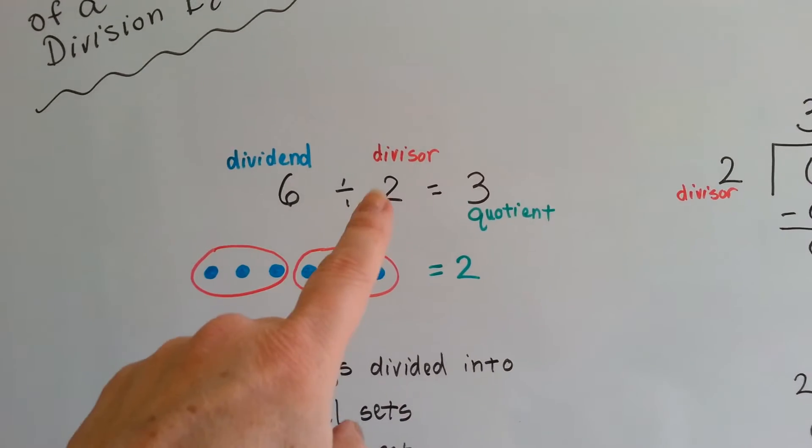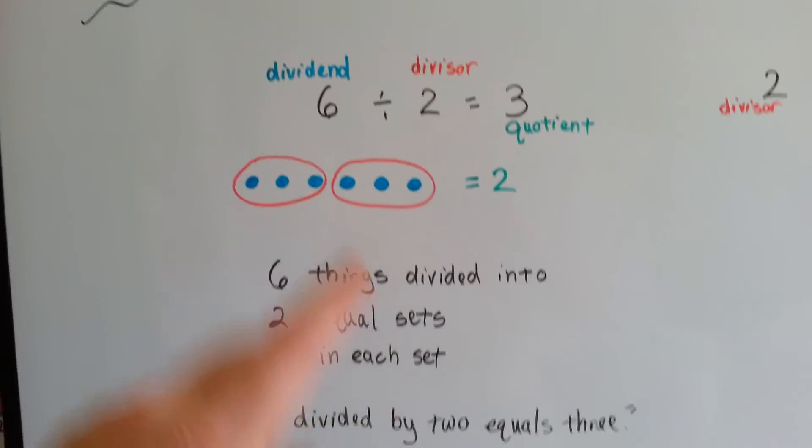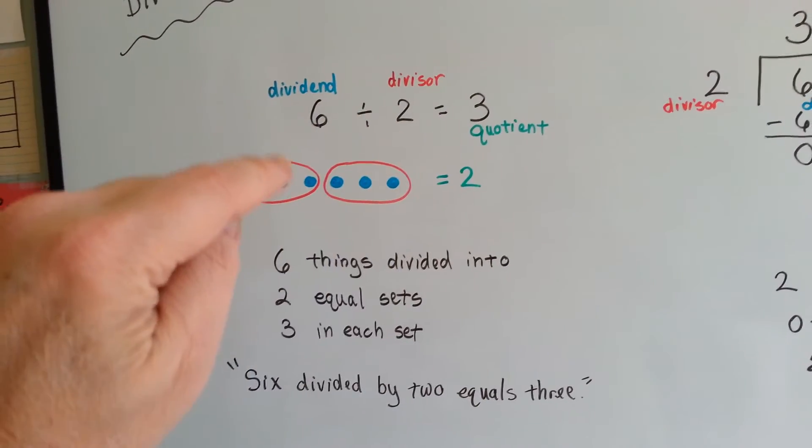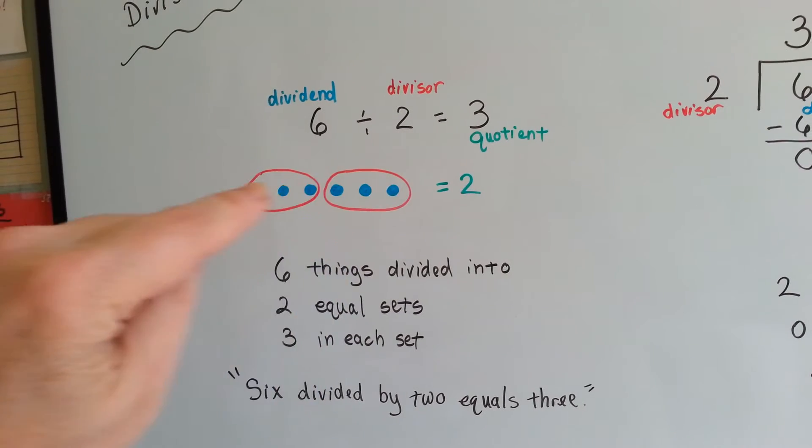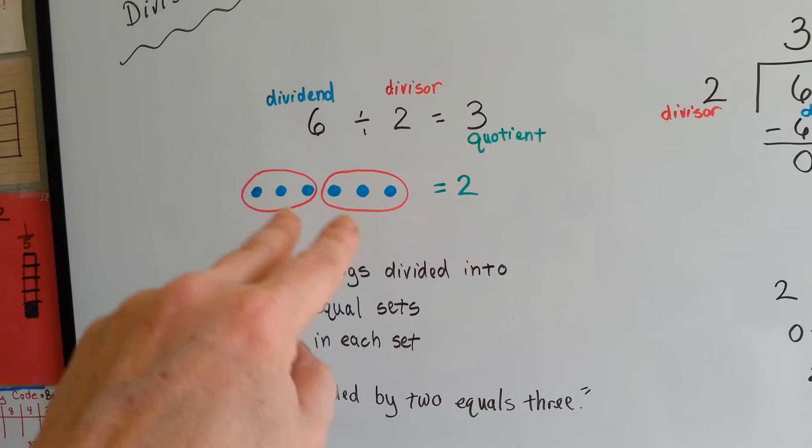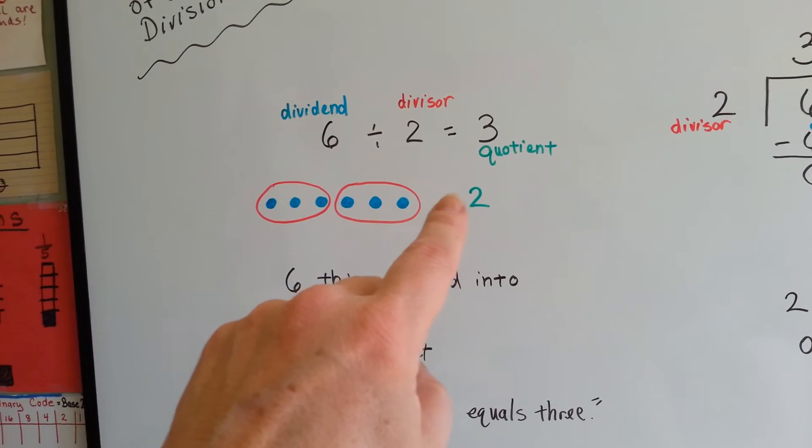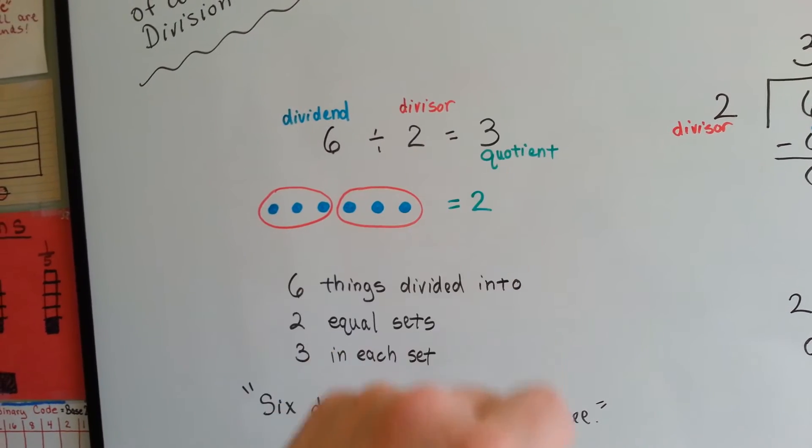Six divided by two equals three. That's how you would read this. What you're doing is taking six items and dividing it into two sets. It's two sets. Two sets of three.